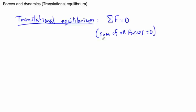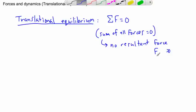What that really means then, that implies that there's no resultant force. And if you have no resultant force, that's like saying F net equals zero. So if you have all your forces adding up to zero, that means you have no resultant force. That means the net force is zero.